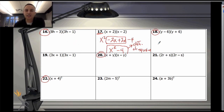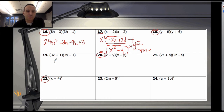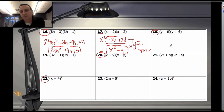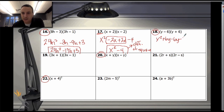Pause the video and try problems 16, 18, and 20. For problem 16: 24h squared, minus 8h, minus 9h, plus 3 — combining like terms gives 24h squared minus 17h plus 3. For problem 18: y squared, positive 6y, negative 6y — those cancel — minus 36. That's another difference of a square. For problem 20: all variables, no numbers. x times x is x squared; x times negative y is negative xy; y times x is positive xy — they cancel — and y times negative y is negative y squared. Final answer: x squared minus y squared.